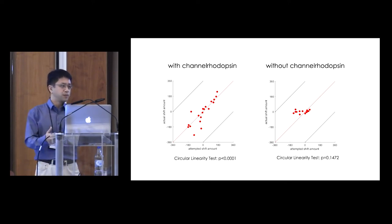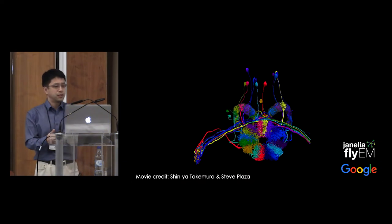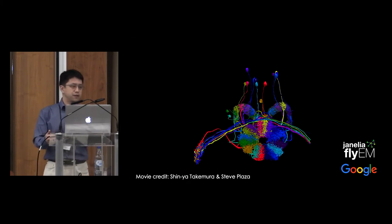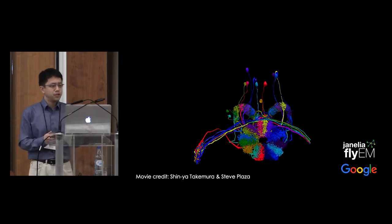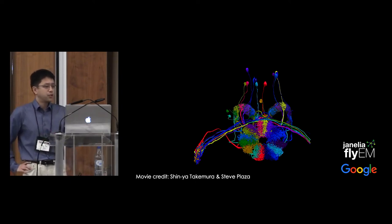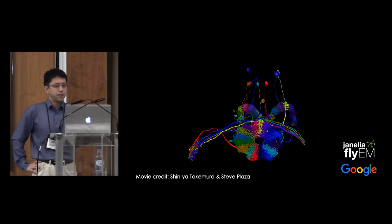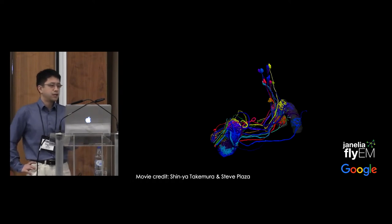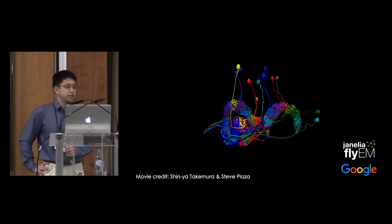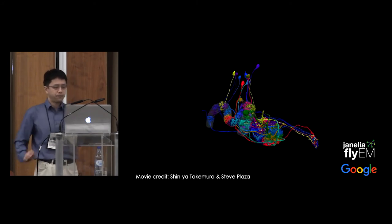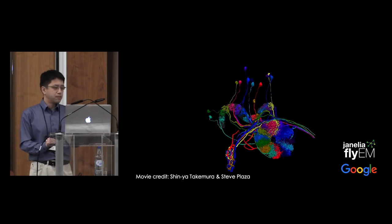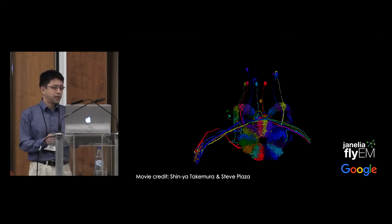But how do visual inputs get to the compass neurons? This is where we get useful information from anatomy. This is a preliminary result from the emerging fly connectome, which is a collaboration between Google and the Janelia Fly EM team. It is still being proofread, but we can clearly appreciate a lot of details relevant to our question.